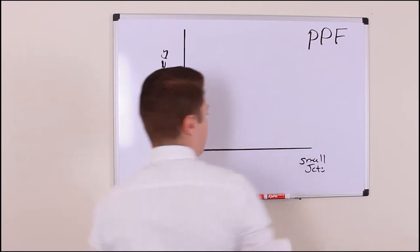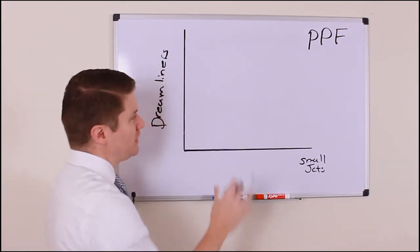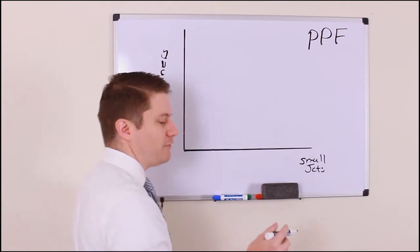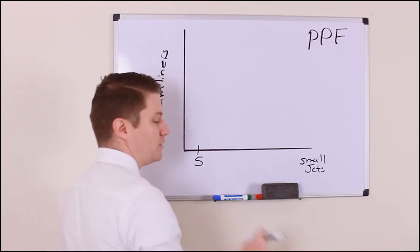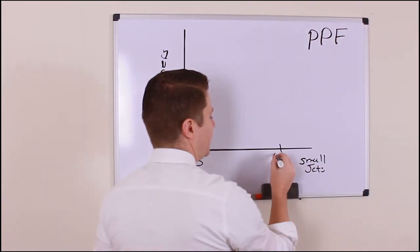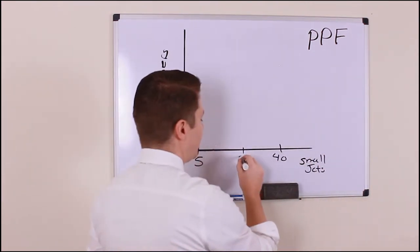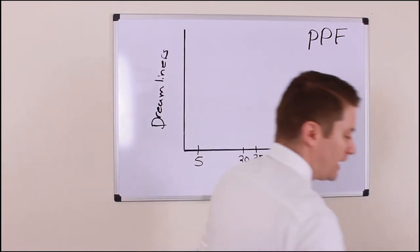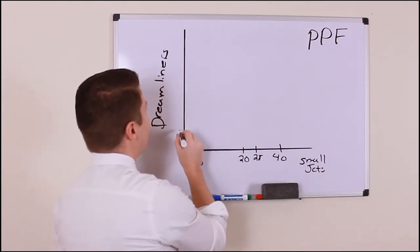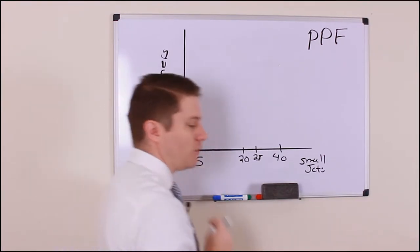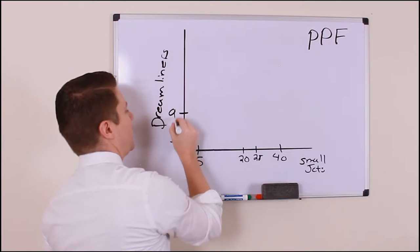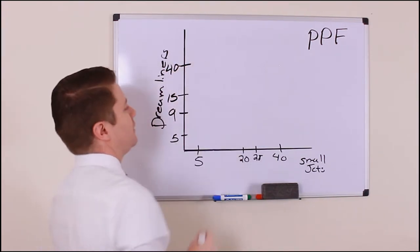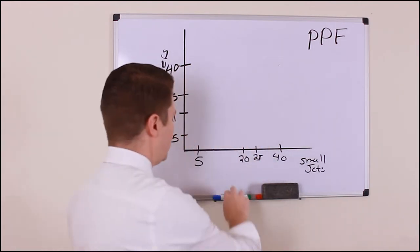Dreamliners are those giant jets — really, really big ones. This is the production possibility curve for the United States. They plot a couple of extremes, going by fives: on the x-axis it goes all the way to 40, with intermediate values of 20 and 28. On the y-axis for dreamliners it goes up to 40, with values of 5, 9, and 15 in between.